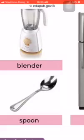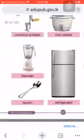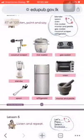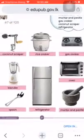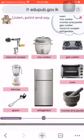Now, read the words and point to the relevant picture with your finger. Shall we start now? Ok kids: Coconut scraper, Rice cooker, Gas cooker, Oven, Blender, Spoon, Refrigerator, Mortar and pestle. Yes, sounds great children! If you enjoy...